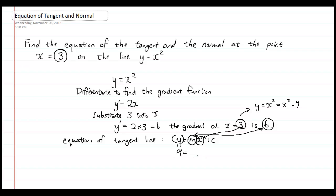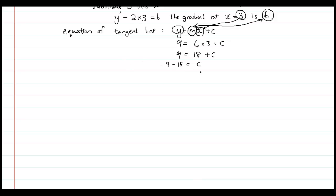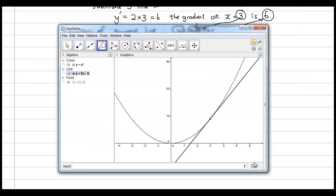Substituting in, we have 9 equals 6 times 3 plus c, so 9 equals 18 plus c, giving c equals 9 minus 18, so c equals negative 9. The equation of the tangent line is y equals 6x minus 9. Checking this in GeoGebra confirms that is indeed correct.